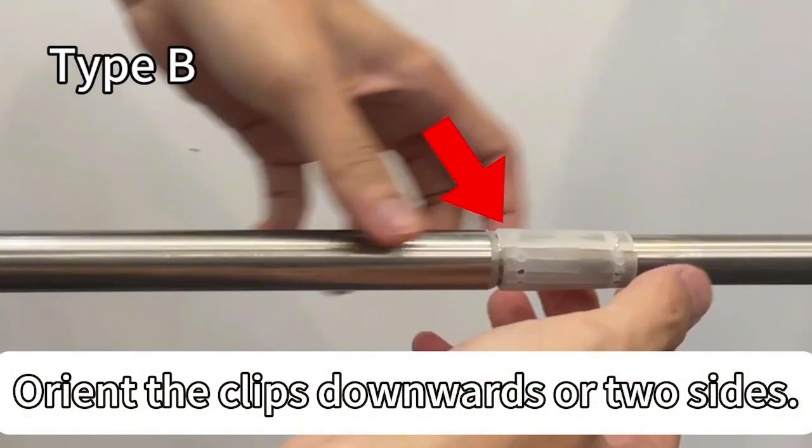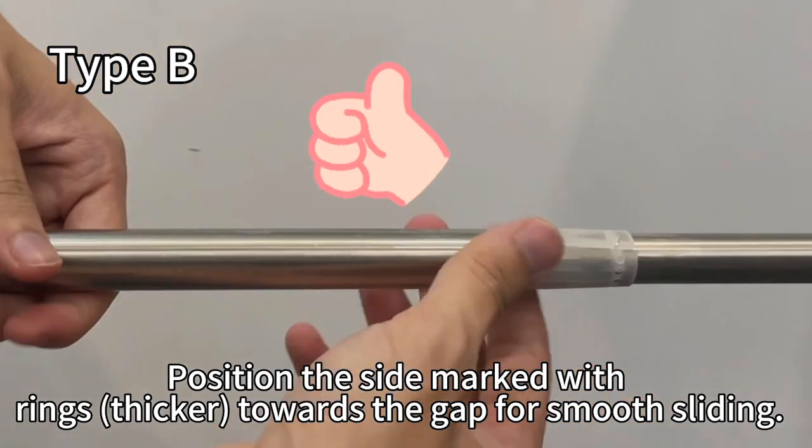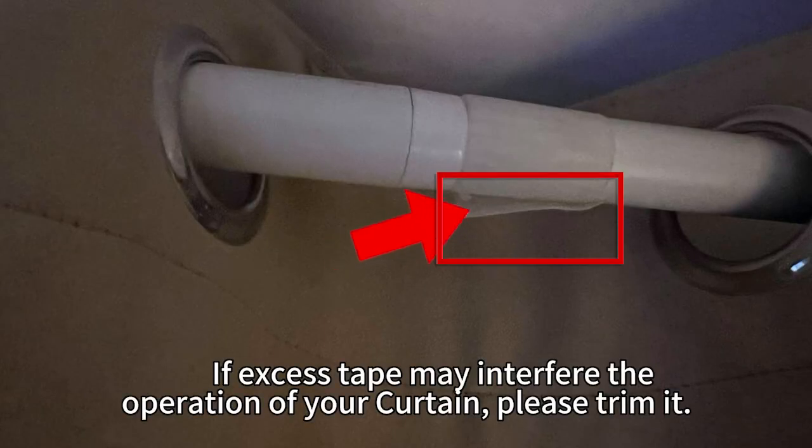Orient the clips downwards or to the sides. If excess tape may interfere with the operation of your curtain, please trim it.